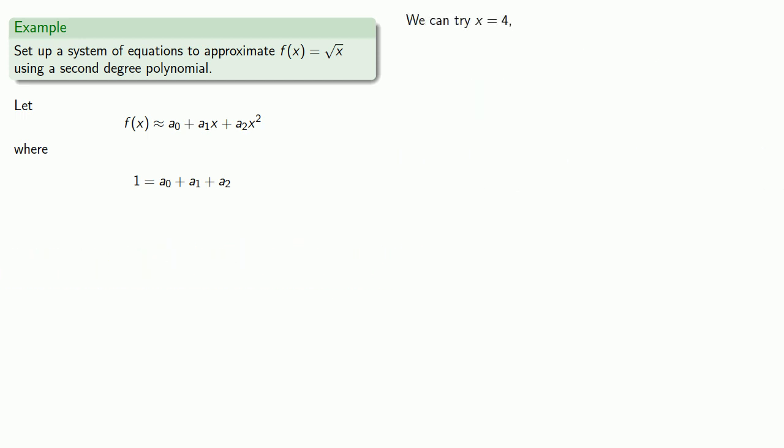Well, how about x = 4? So again, our function value at 4 is square root of 4, which we know exactly equal to 2. And if we have a good approximation, that polynomial at x = 4 should give us the function at x = 4. So we'll substitute those in and do a little bit of algebra.